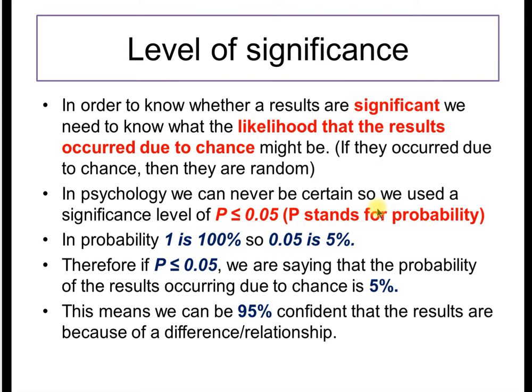Back to the topic, level of significance. In order to know whether a result is significant, we need to know what the likelihood is that those results could have occurred due to chance. If they occurred due to chance, then they can be treated as random. In psychology, we can never be 100% certain. In fact, in any science, even physics, which is very robust, very precise, even in physics they can never be 100% certain. There is always uncertainty. So we use the idea of probability.